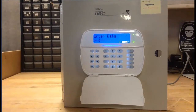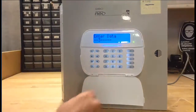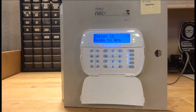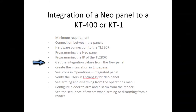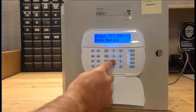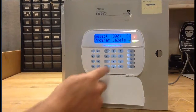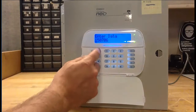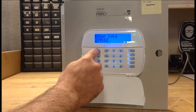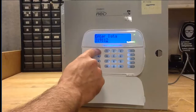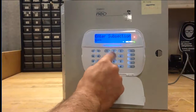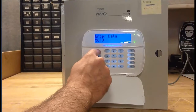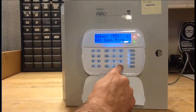Once the IP address is set, go to subsection 664 and make sure that number 3 is active. Now we're going to get the integration values from the NeoPanel. Press star 8 and our installer code 5555, then go to 851 and subsection 651. Scroll right to see all 12 numbers and write that down, as you'll need to enter it in EntraPass later. Then go to subsection 652 — this time you have 8 characters. Copy those and make sure you enter the same in EntraPass.